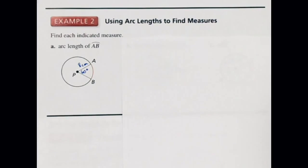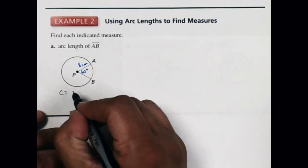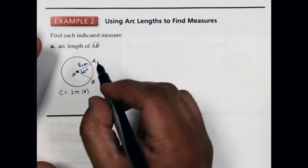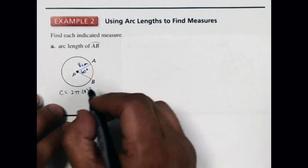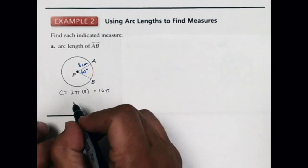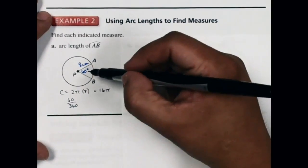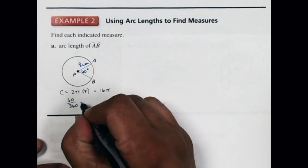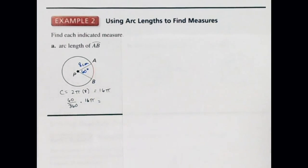Here the radius is 8, so the total circumference is 2 times pi times 8, which is 16 pi. Since I only want arc AB, which is 60 degrees of the circle, I multiply the circumference by 60 over 360: that's 60 over 360 times 16 pi. Simplifying, the arc length is 8 pi over 3.